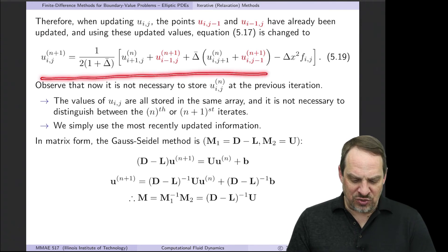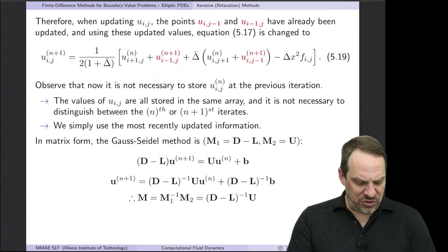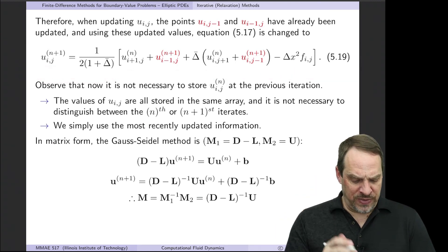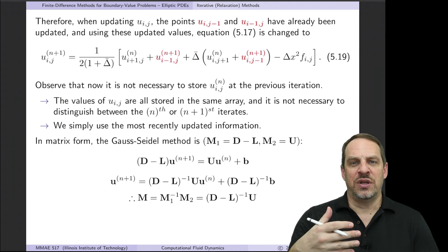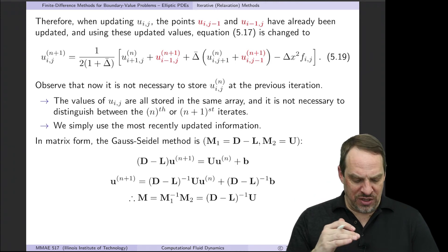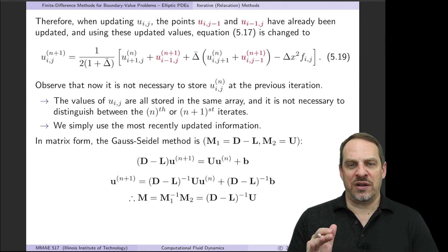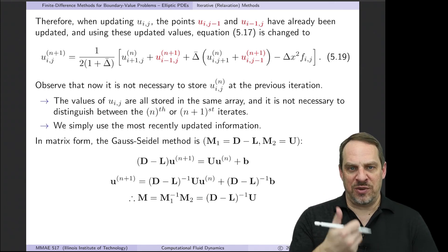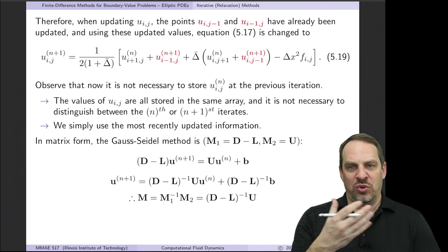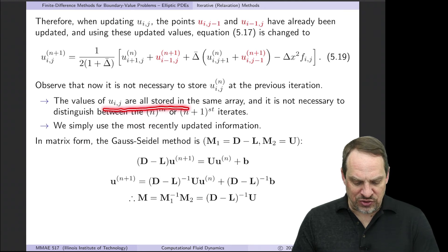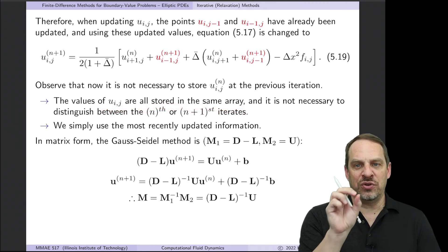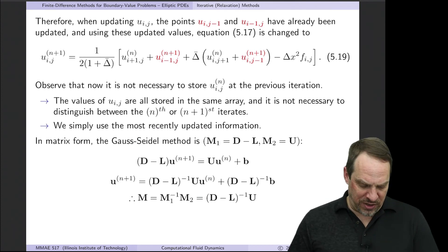As we sweep through the grid with i and j increasing, when we reach point ij we will have already updated the i,j−1 and i−1,j points. So why not use those updated values? Jacobi uses all previous nth-iterate values for all four surrounding points. Gauss-Seidel instead uses the already-updated values for those two points. The i−1,j and i,j−1 terms are now at the n+1 iterate. In implementation, we simply store all u values in the same array, replacing old values with new ones as we update them one by one.